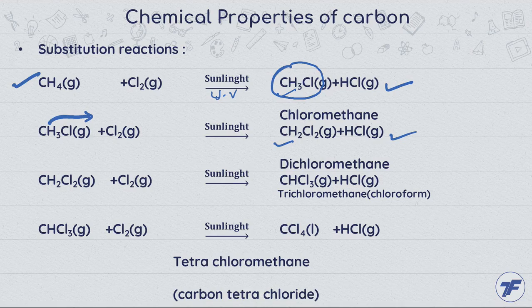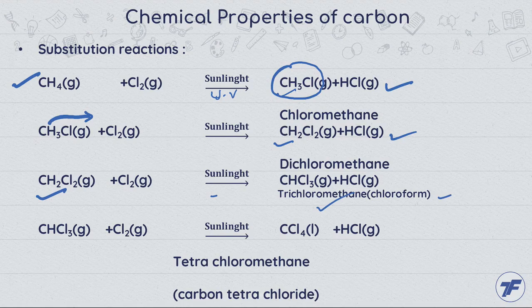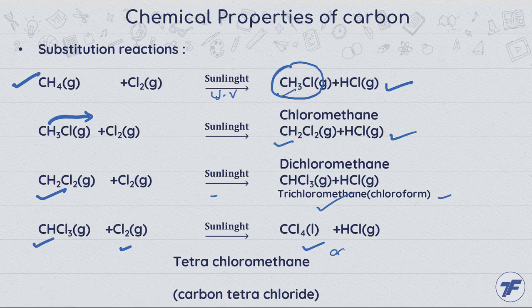Similarly, this reaction process goes on. From dichloromethane, when chlorine reacts with it in presence of sunlight, we get trichloromethane, which is also called chloroform — an organic solvent mostly used to dissolve organic compounds.